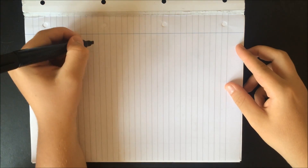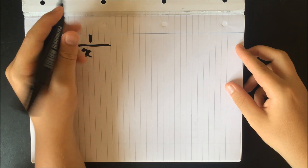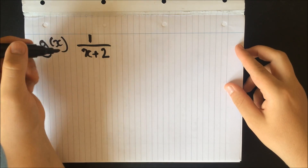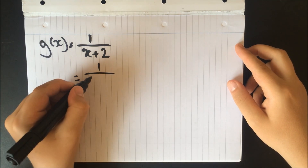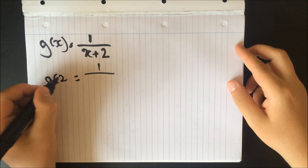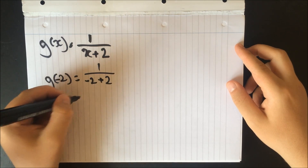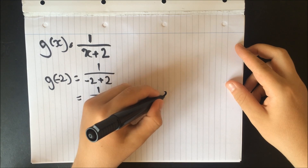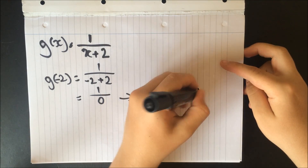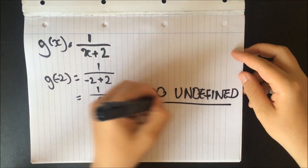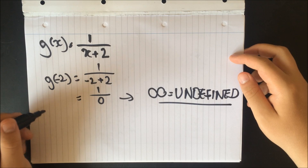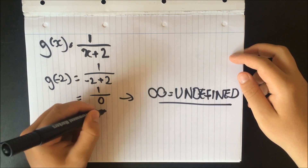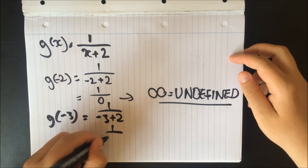How about if we took fractions? So if g of x was 1 over x plus 2 — if x was to be minus 2, we do g of minus 2, that gives us 1 over minus 2 plus 2, which is 1 over 0. That would give us infinity, which we say is undefined. If x was to be minus 3, it would be fine — 1 over minus 3 plus 2 is 1 over minus 1, which is just minus 1.